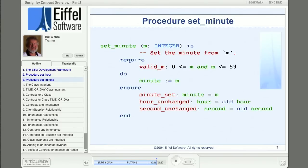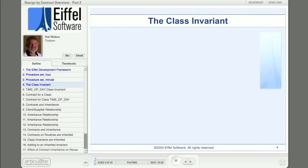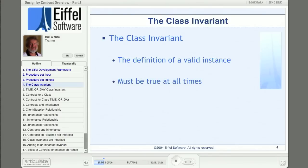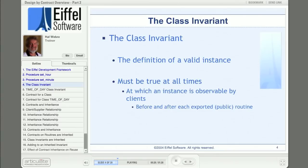So, we go on and build the best contracts we can around the routines in a class. Once we've done that, we've almost got a complete contract for the class, but not quite. There's one other type of assertion that can provide another very important element of specification for a class. And this assertion is called the class invariant. It tells us what it means for an instance of the class to be valid. So, the class invariant must be true at all times, hence the name.